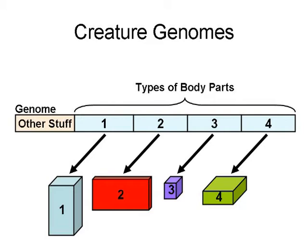And so in this diagram, we've got body part type one has this particular shape, this particular color. The next one has a different shape and color and so on. And so this is what the genome looks like.